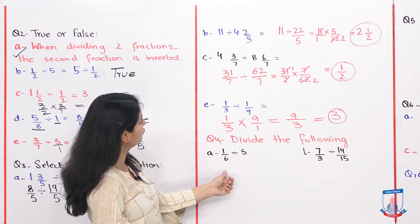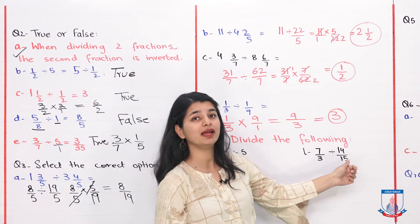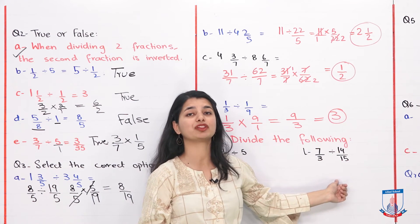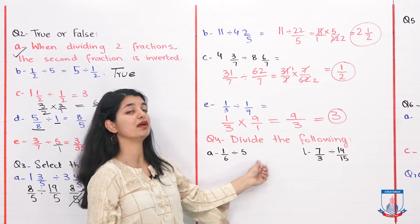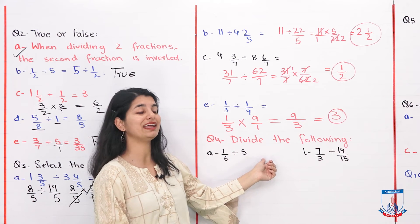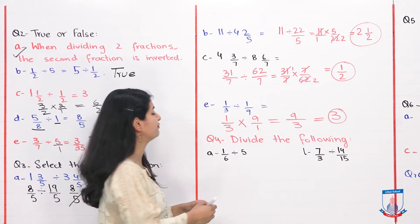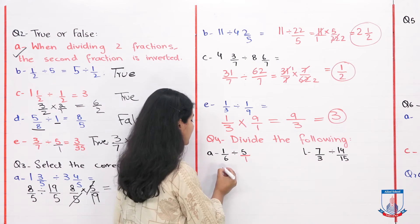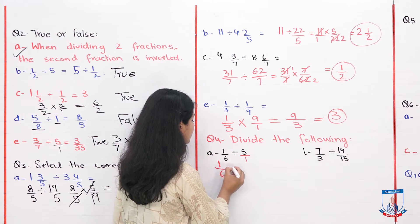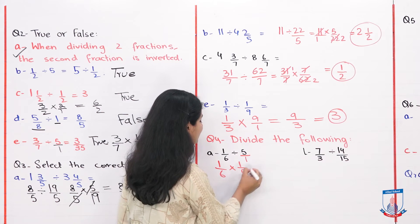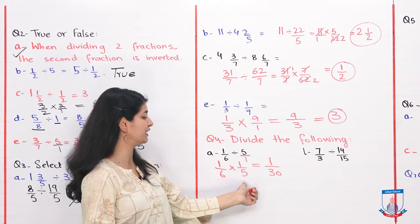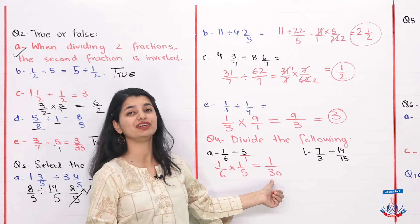Next we have question number 4: divide the following. You have to divide these according to the rules we studied. If we look at it, 1 over 6 divided by 5, which isn't hard at all. What you have to do is assume 5 has 1 below it, then take its inverse: 1 over 6 into 1 over 5 equals 1 over 30, because 6 into 5 is 30. So your answer is 1 by 30.